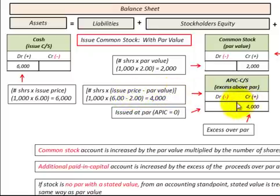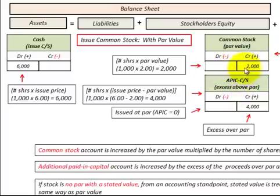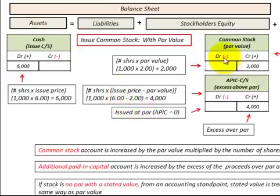Looking at our debit and credit entries: we had a credit of $4,000 for additional paid-in capital for common stock, and a credit of $2,000 in our common stock account for the par value. That $6,000 balances with the debit amount received in cash of $6,000. Also note that if we issue common stock at par value, then our additional paid-in capital for common stock would be zero.